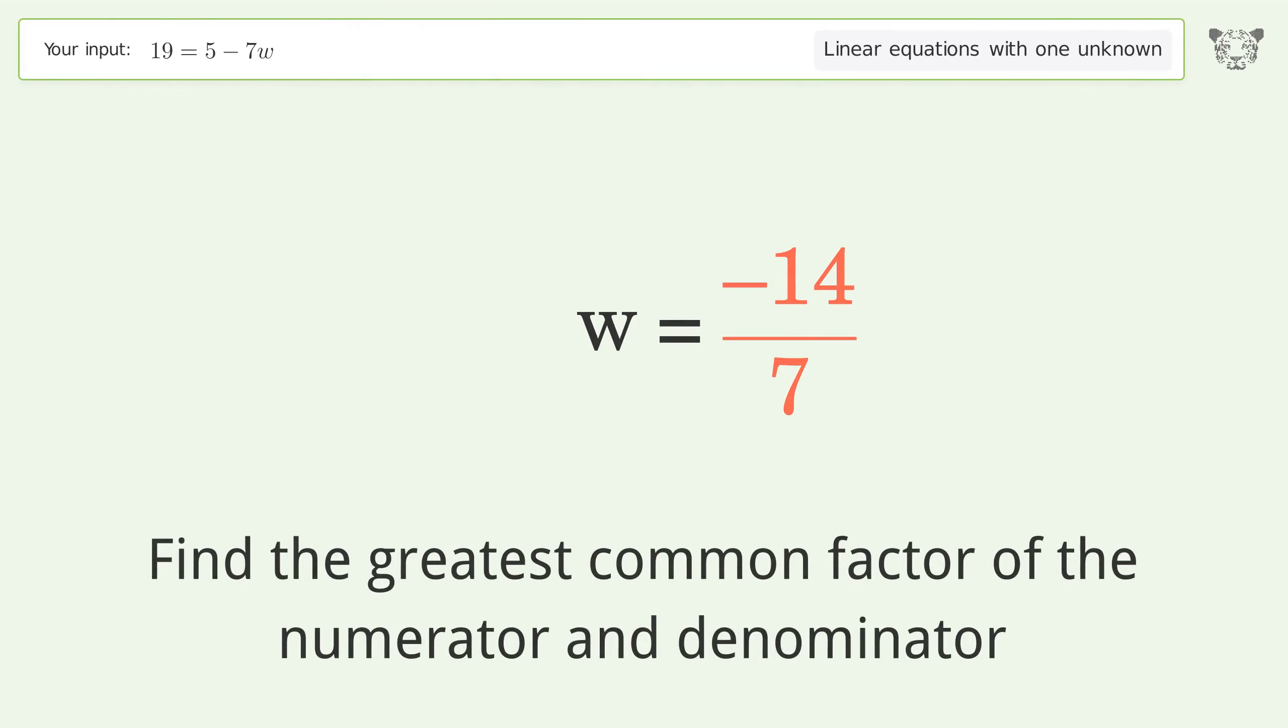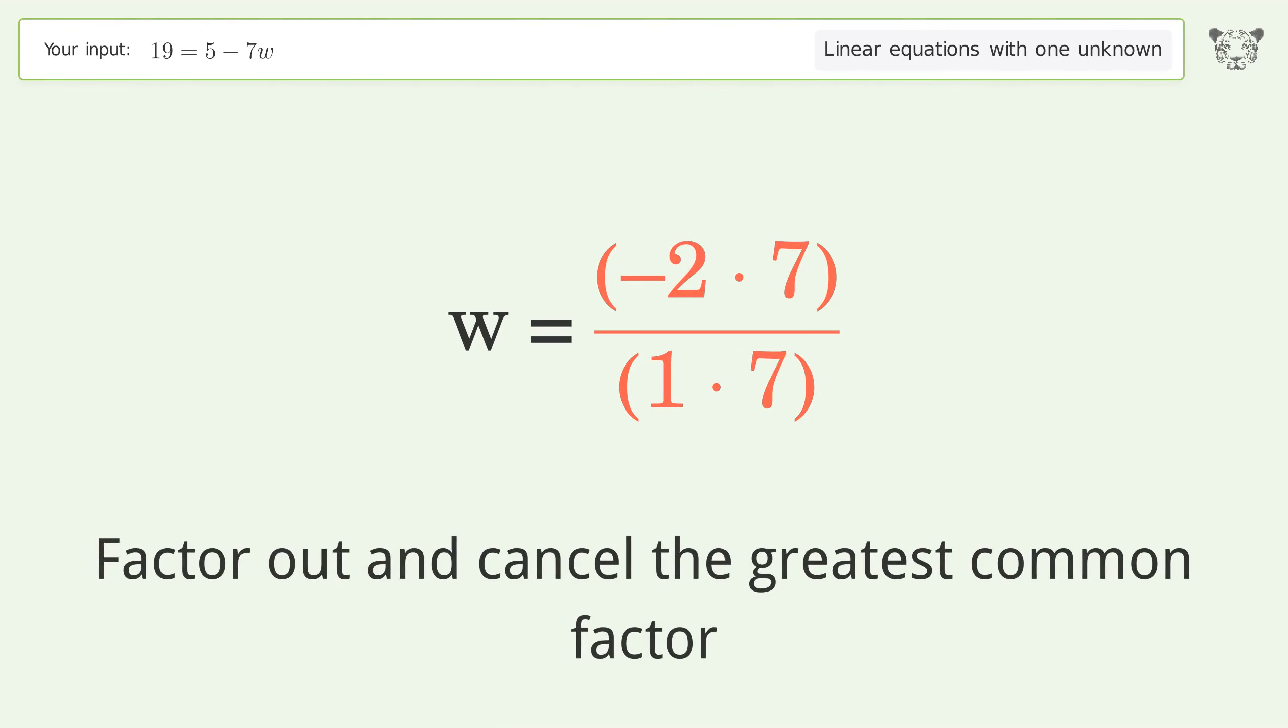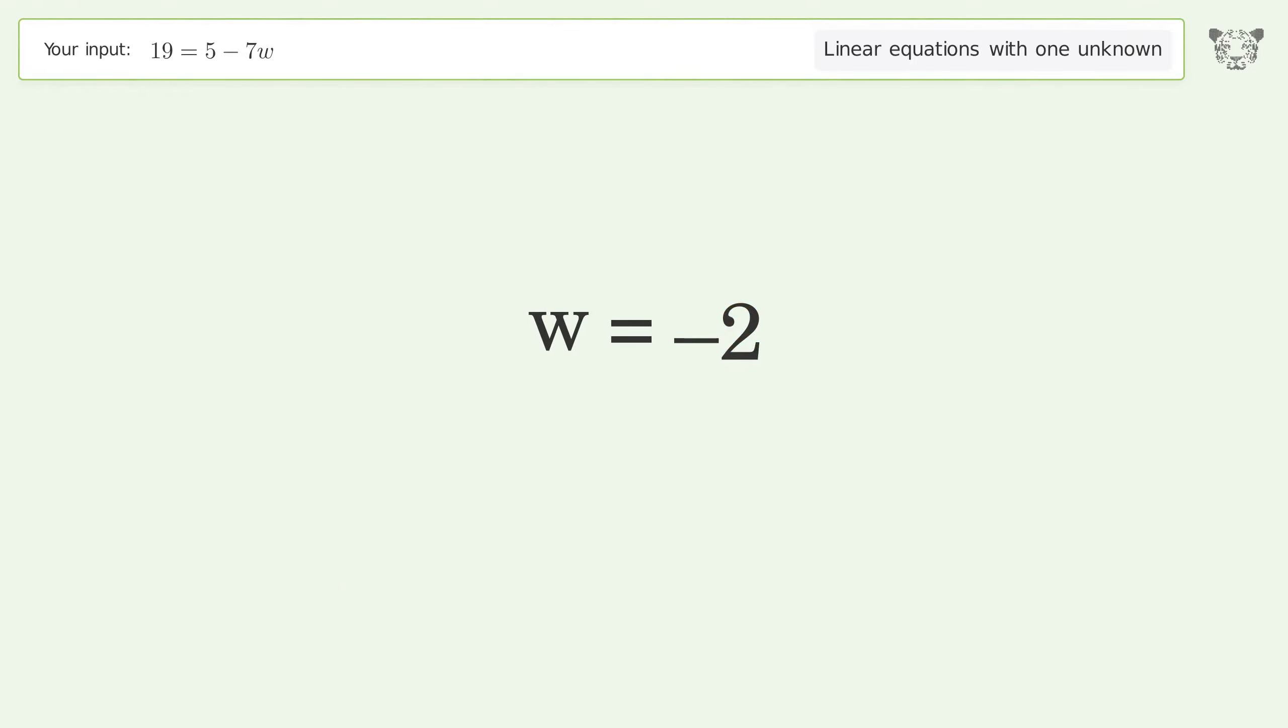Find the greatest common factor of the numerator and denominator. Factor out and cancel the greatest common factor. And so the final result is w equals negative 2.